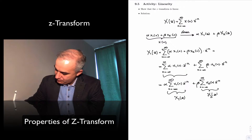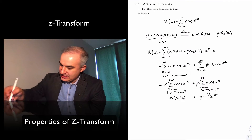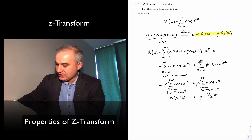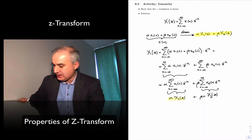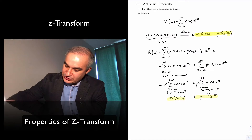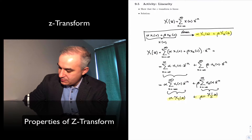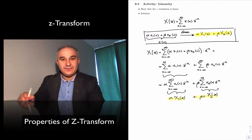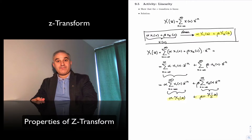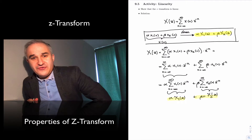So we get alpha times the C-transform of x1 plus beta times the C-transform of x2. You can see that this is exactly what we expected in a linear system. The C-transform obeys linearity and obeys the principle of superposition.